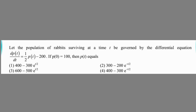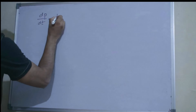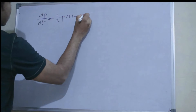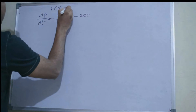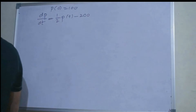If the population of rabbits surviving at time t is governed by the differential equation dp/dt = (1/2)p(t) - 200, and given that p(0) = 100, then what is p(t)? A differential equation is given with the initial condition p(0) = 100, and we have to find p(t).